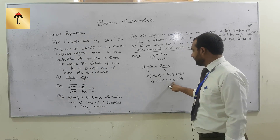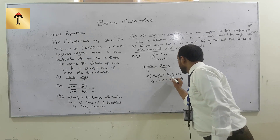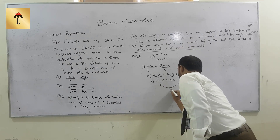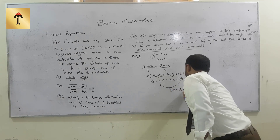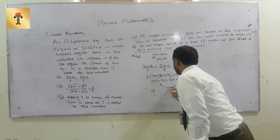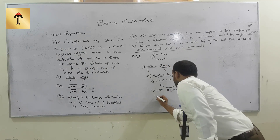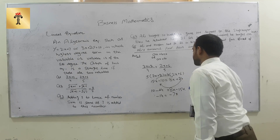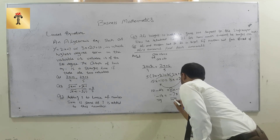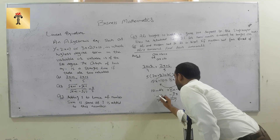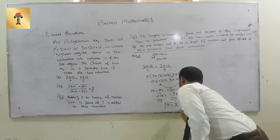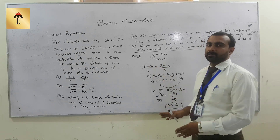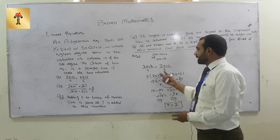Since there is a fraction form with an equality sign in between, we use cross multiplication: 5 into (3x + 2) = 4 into (2x + 6), which gives 15x + 10 = 8x + 24. We need x, so we bring the smaller x term to the other side: 8x - 15x = 10 - 24, giving -7x = -14. Dividing both sides by -7, x = 2.